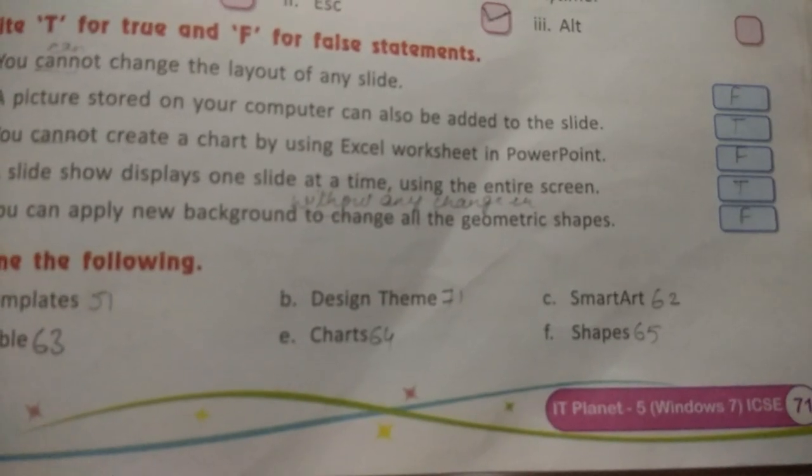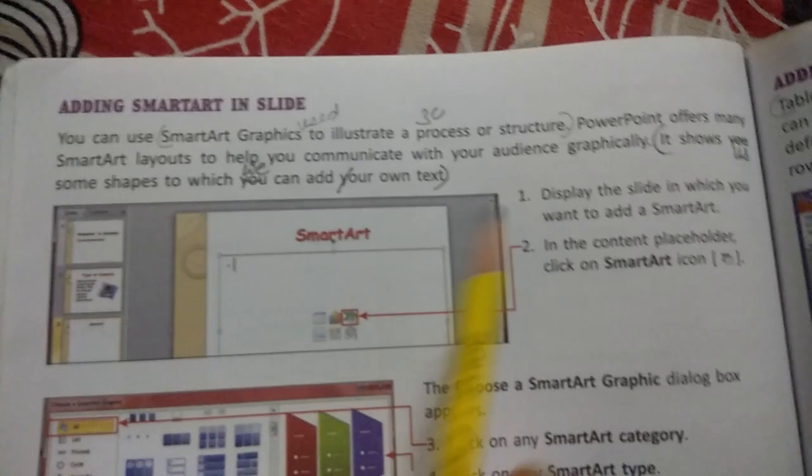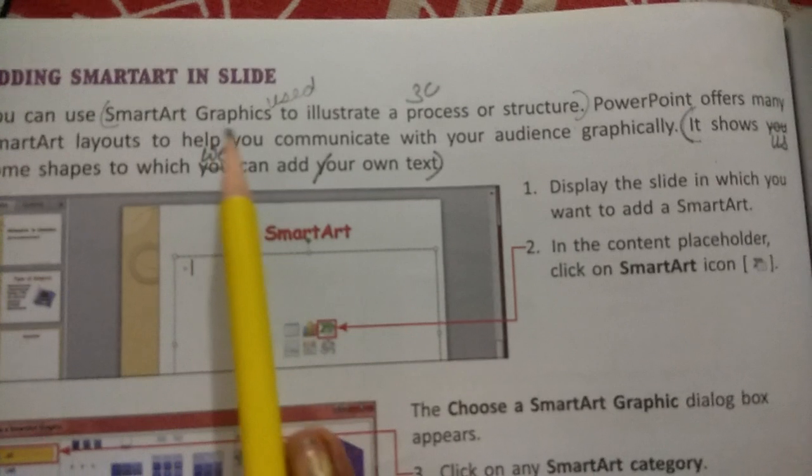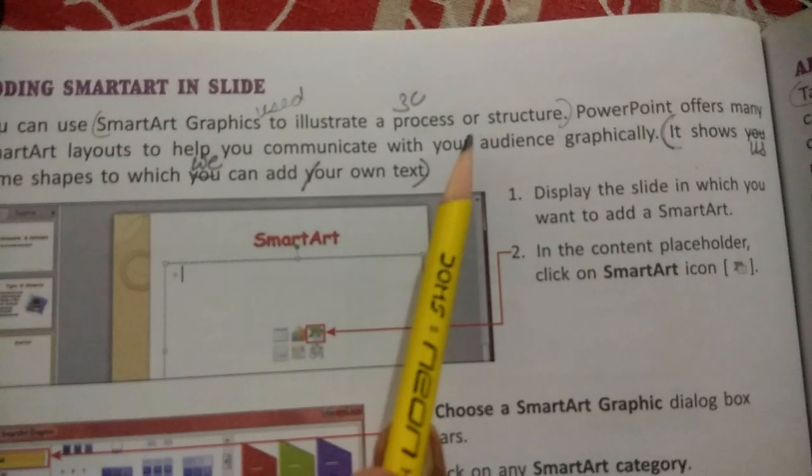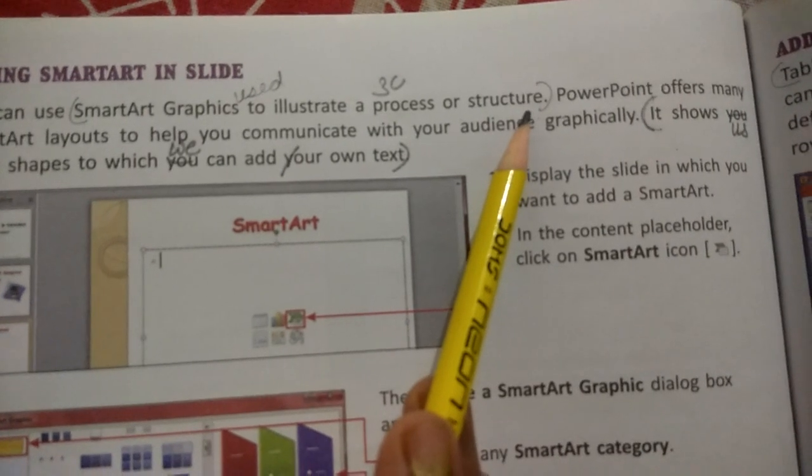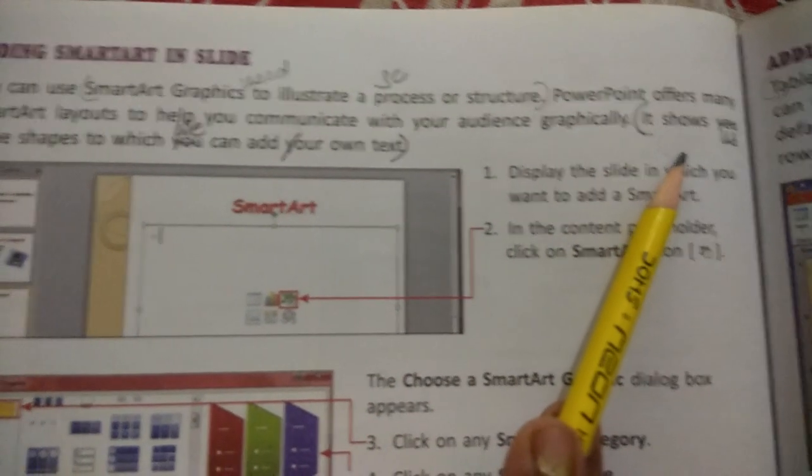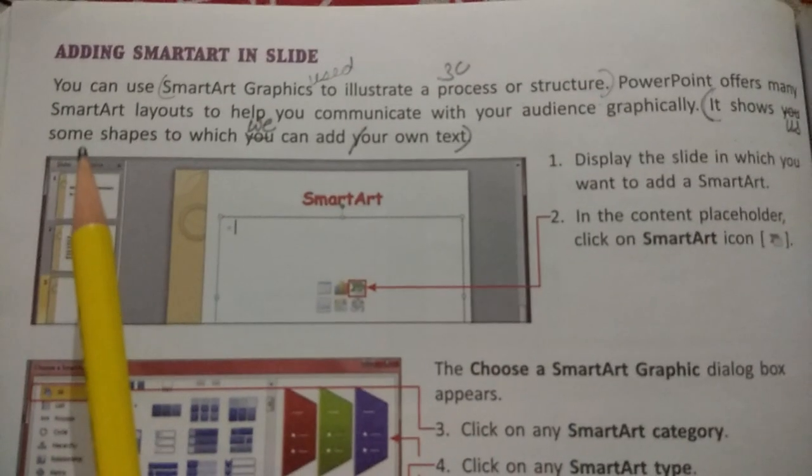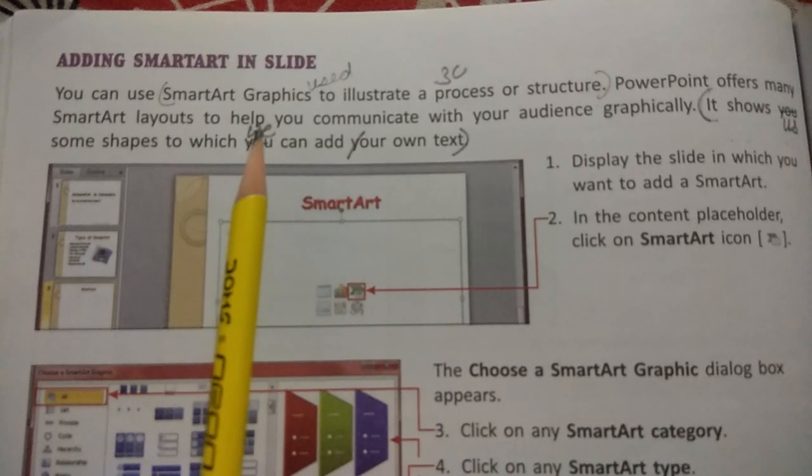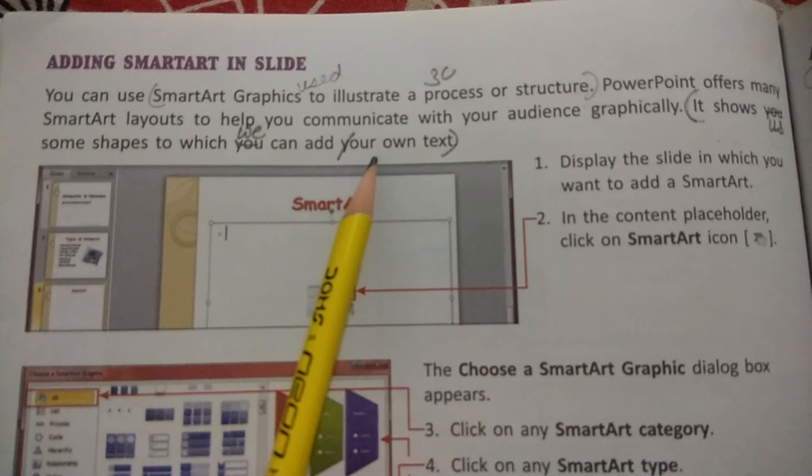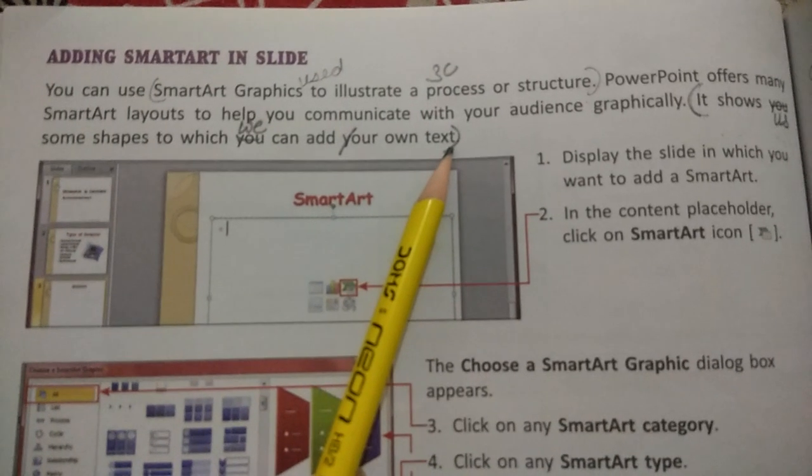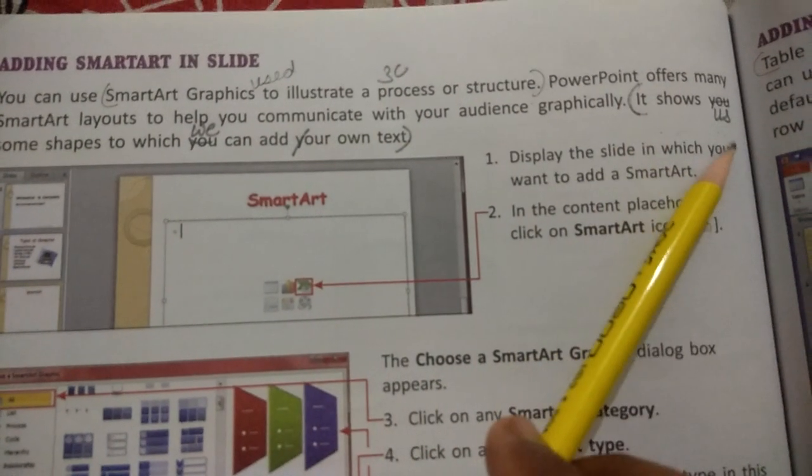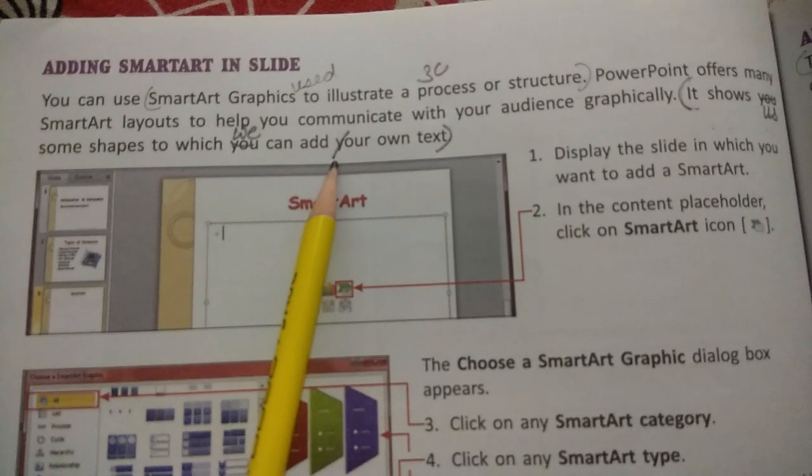Start from the first line: SmartArt graphics. After 'graphics' write 'used'. SmartArt graphics used to illustrate a process or structure. After this, start from here: it shows. Cut 'you' and write 'us'. It shows us some shapes to which - cut 'you' and write 'we' - we can add our own text. I repeat: SmartArt graphics used to illustrate a process or structure. It shows us some shapes to which we can add our own text. This is answer number 3C.